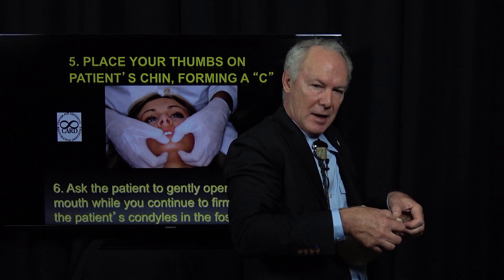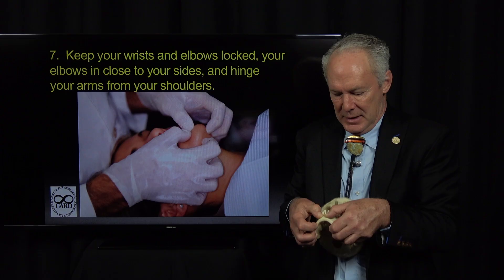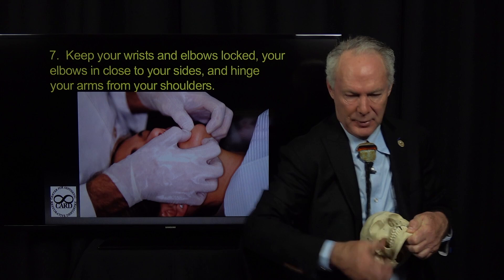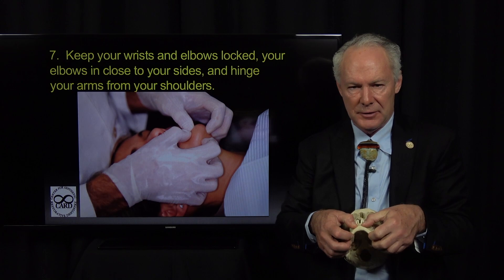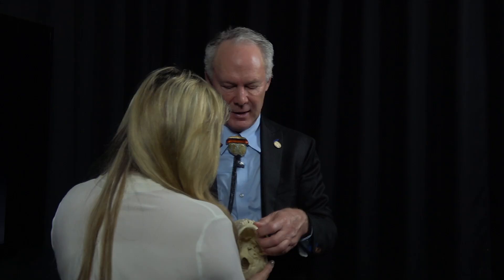The movement is rotating up into the fossa as the patient gently opens their mouth. Keep your wrists and elbows locked, elbows close to your sides, and hinge your arm from the shoulders — putting firm pressure on the condyles, seating them as the patient opens. Ask the patient to move their mandible open or close very slowly. Don't open the mouth wide or rapidly hinge the mandible, or you'll make them splint.